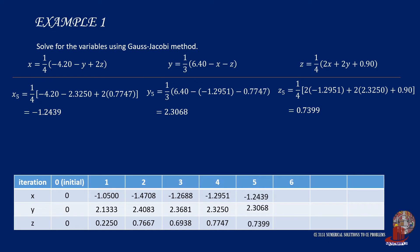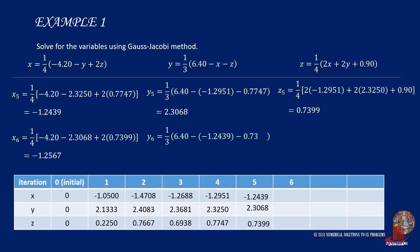On to the sixth iteration, x₆ is one fourth of negative 4.2 minus 2.3068 plus twice of 0.7399, resulting in negative 1.2567. y₆ is one third of 6.4 minus negative 1.2439 minus 0.7399, giving 2.3013. z₆ is a quarter of twice of negative 1.2439 plus twice of 2.3068 plus 0.90, giving 0.7565. Seemingly, the decimals at this stage change minimally.